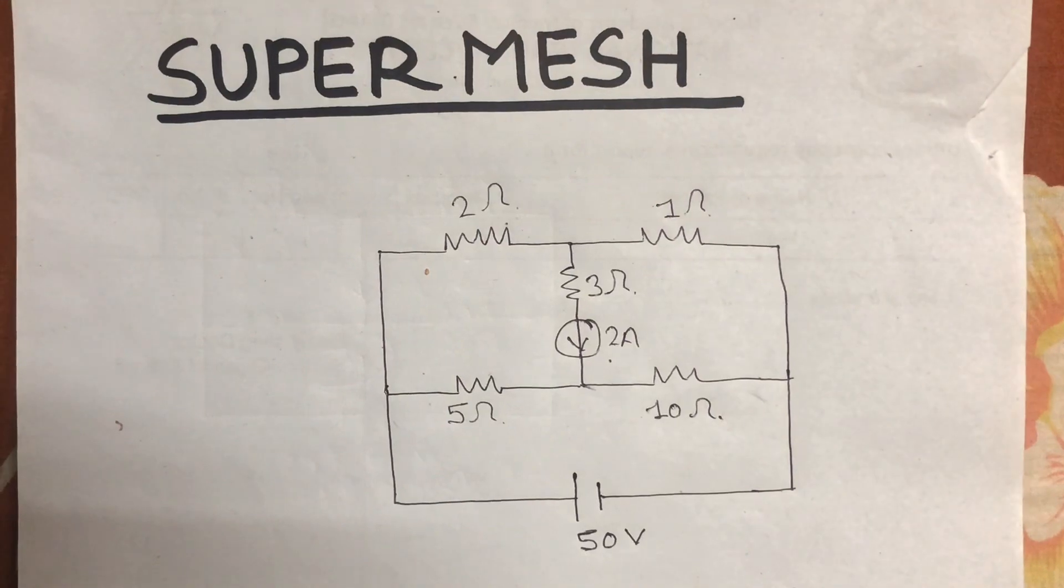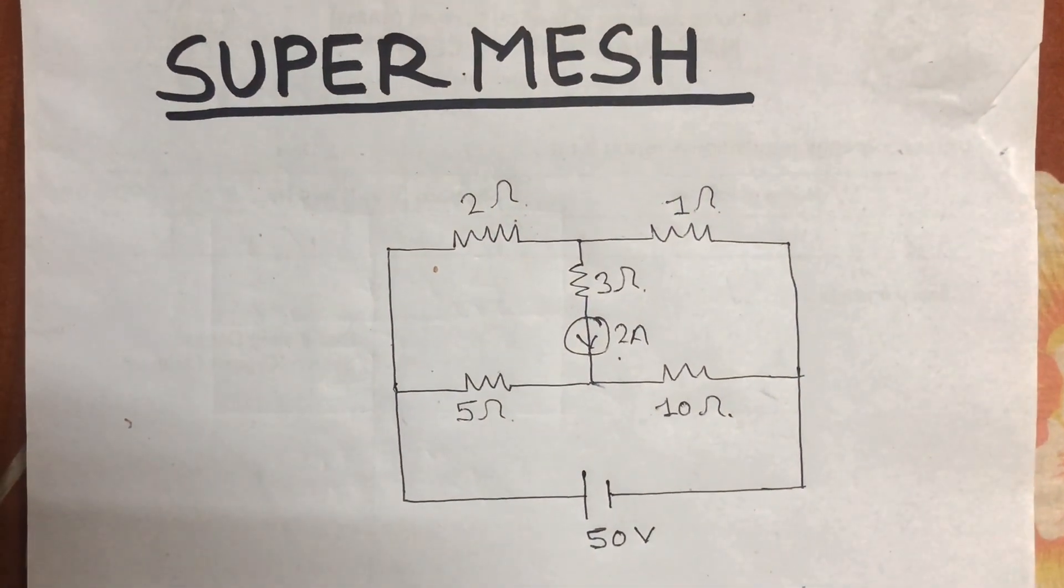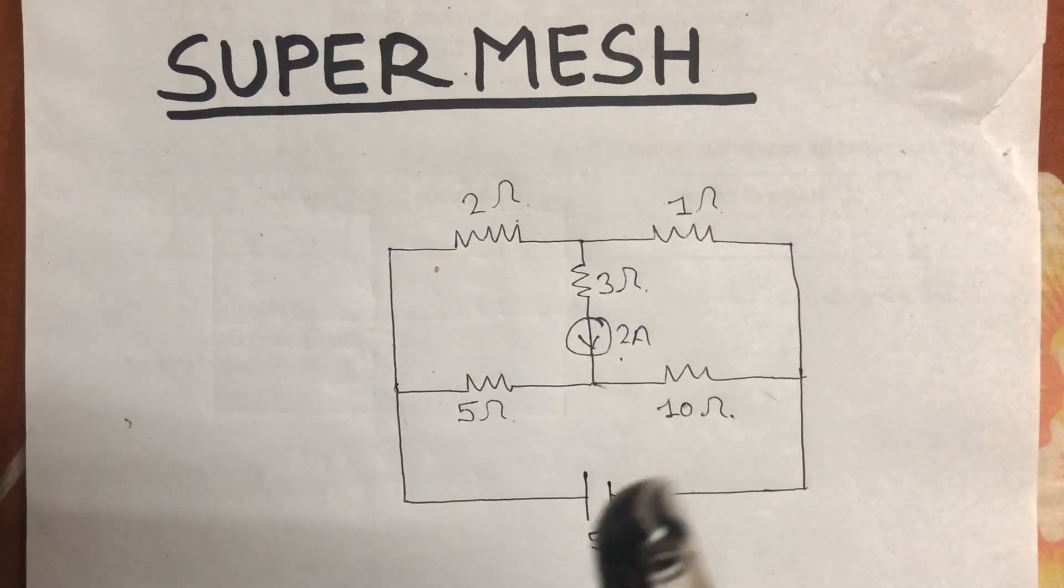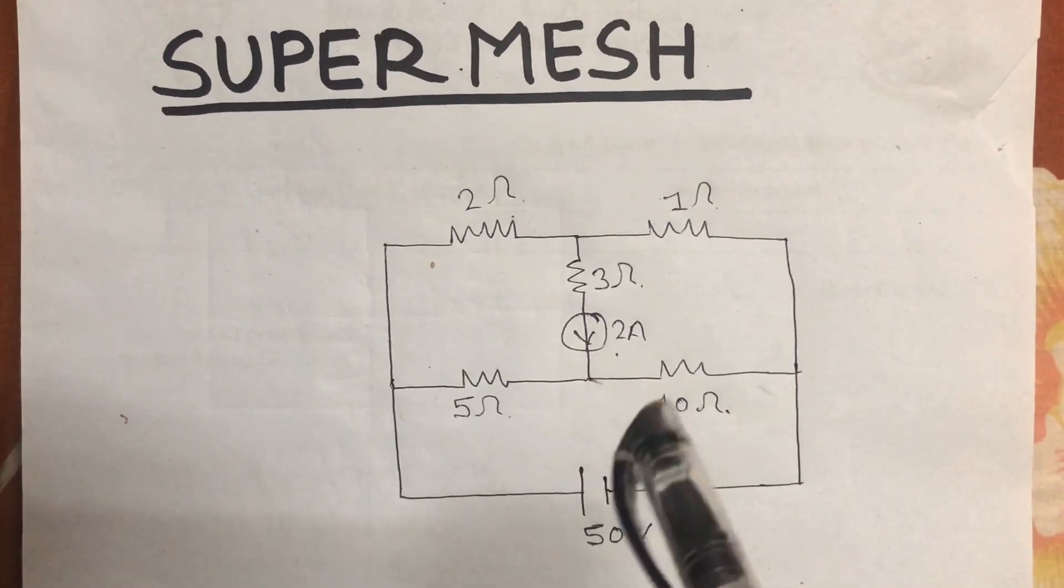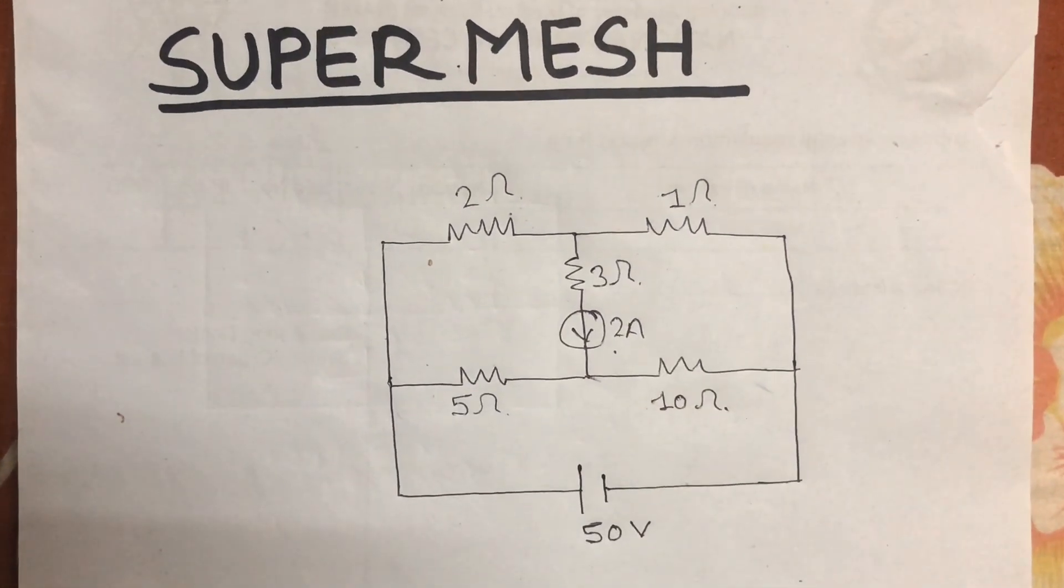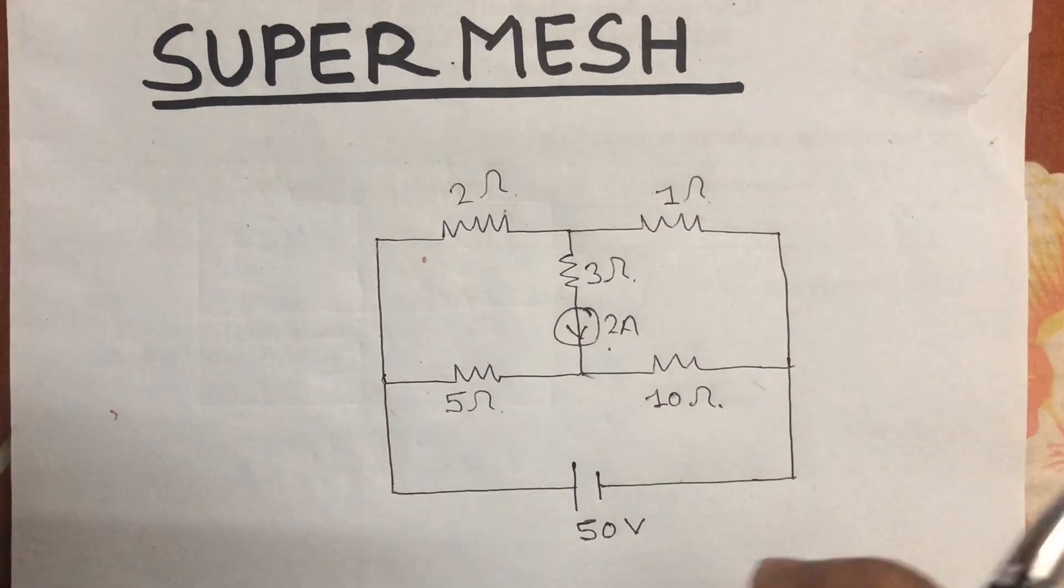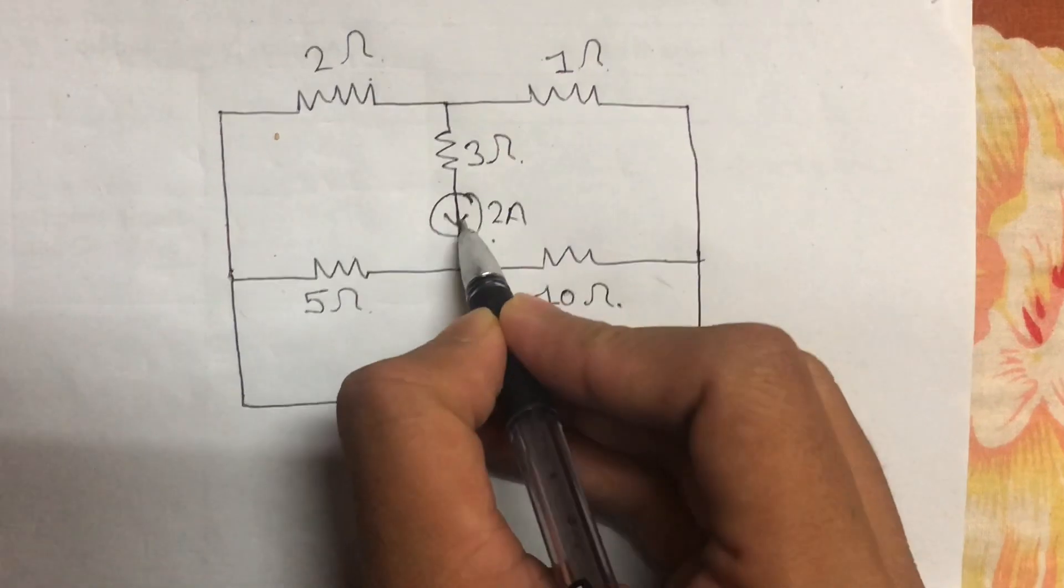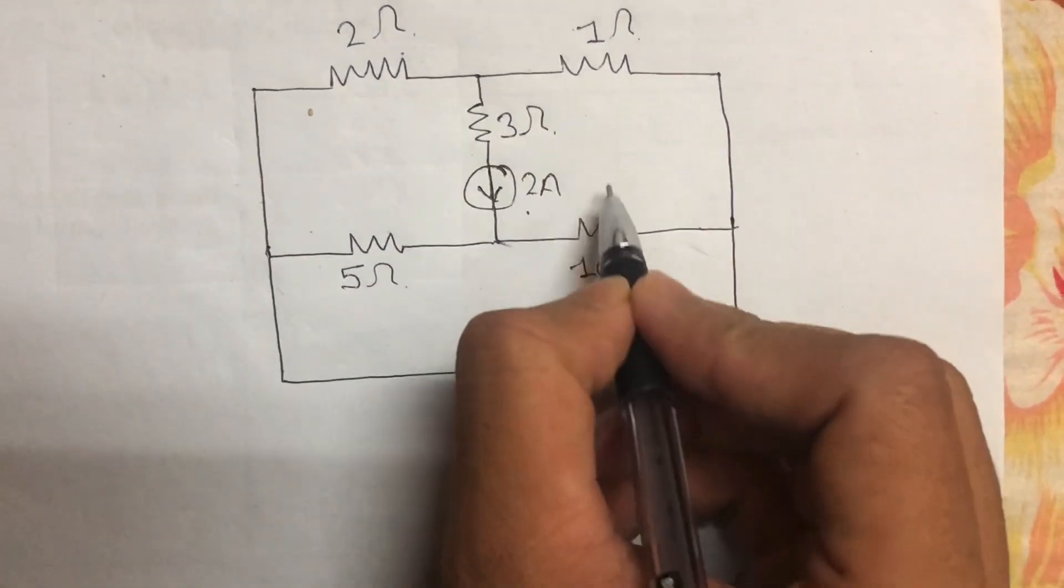Hello everyone, welcome to my YouTube channel Educational Park. Today I'm going to discuss super mesh, in which condition super mesh is applied. First of all, super mesh means when any current source is connected between two loops, then we call it super mesh.